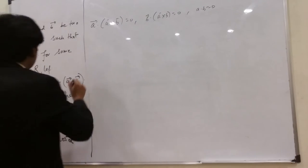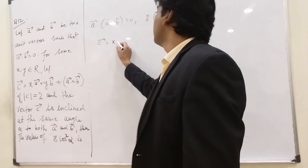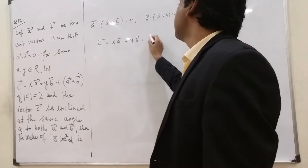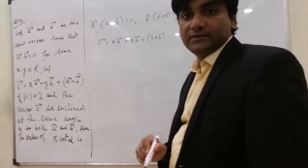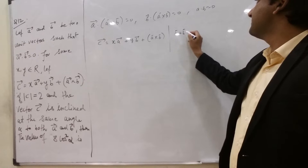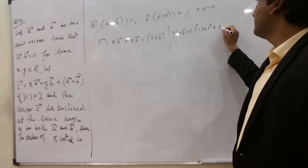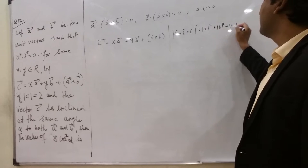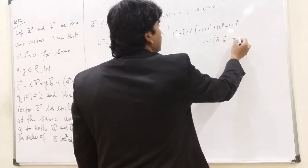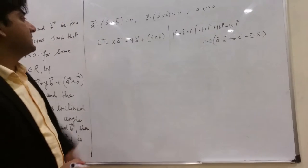Now this C is given. This vector C equals x A plus y B plus A cross B, right? Now, if you remember one formula, then A plus B plus C mod square is mod A square, mod B square, mod C square plus twice of A dot B, B dot C, C dot A. We will apply this concept over here.